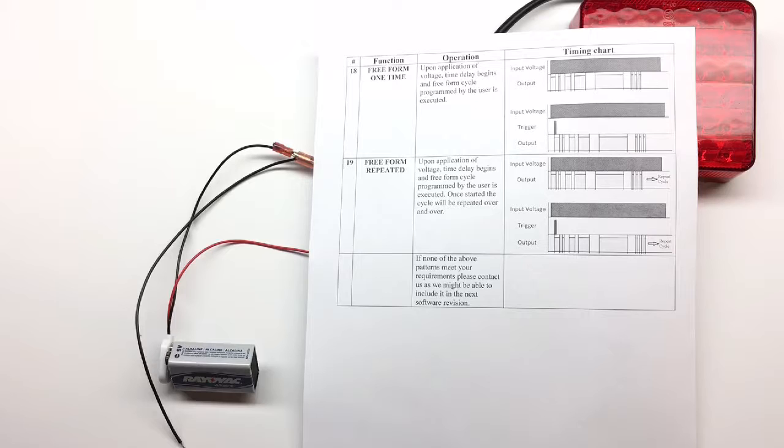Let's take a look at options 18 and 19. Option 18 and 19 are free form. It allows you to create a custom waveform for your output. You will teach the timer when to turn on and off, up to 100 different steps.